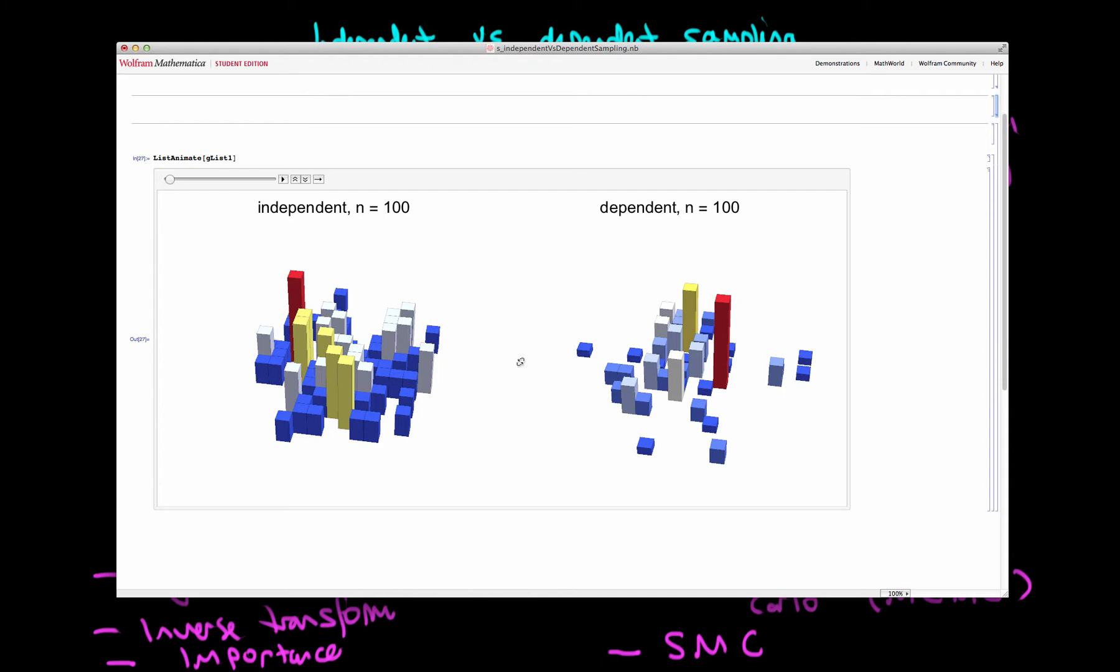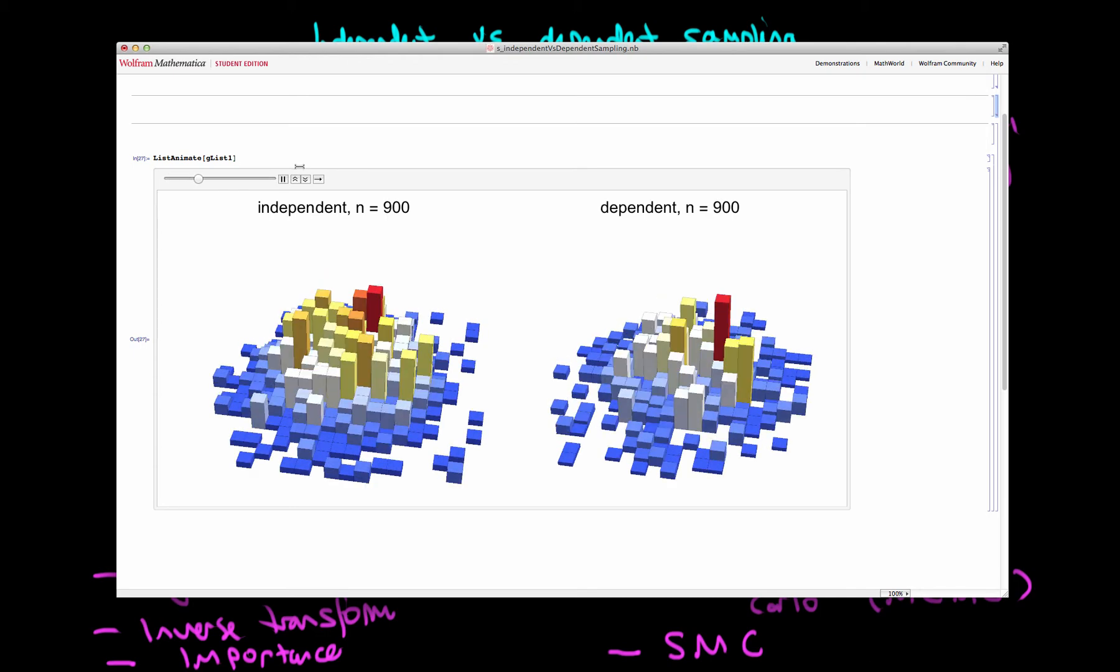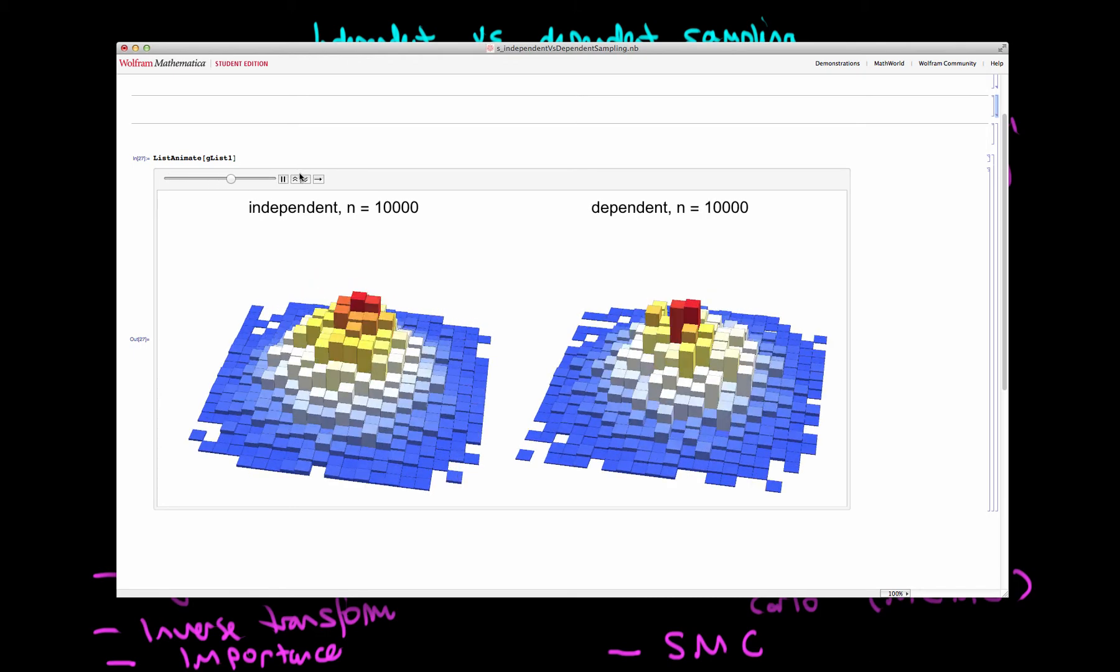The distributions which I'm showing here are the histograms of all the samples when I'm trying to sample from a two-dimensional normal distribution.